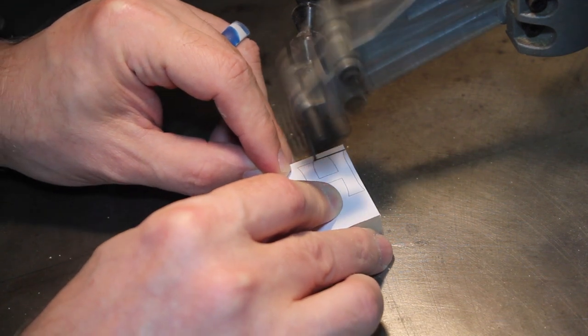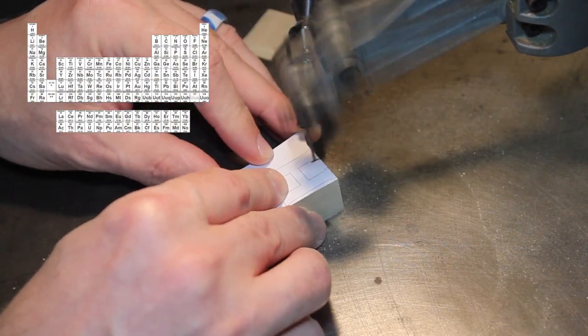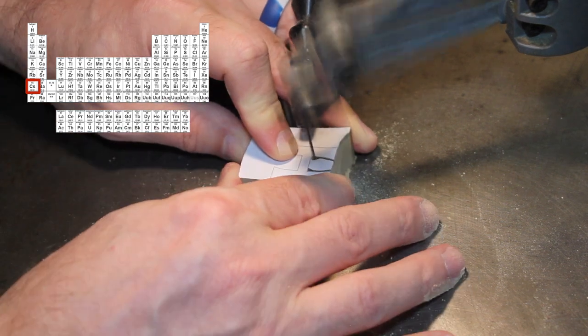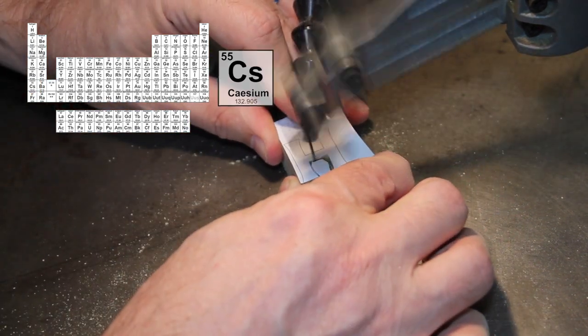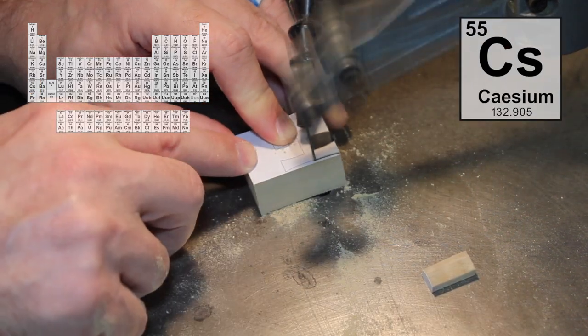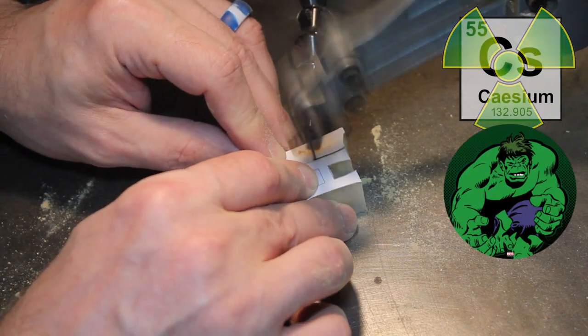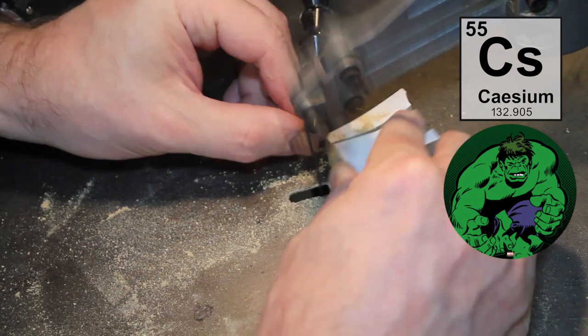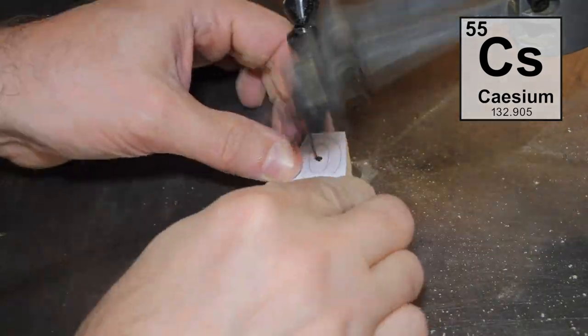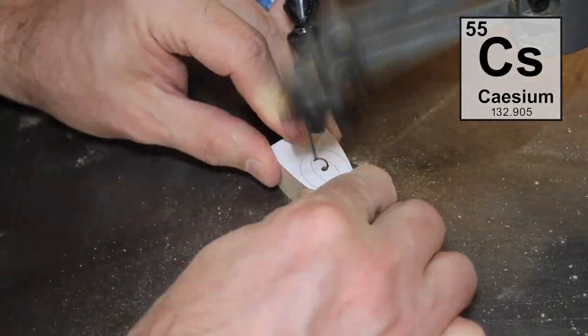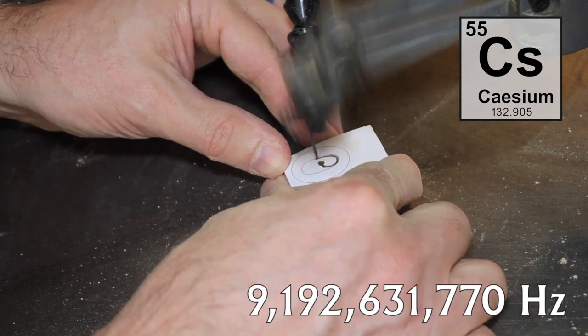Here we go. Scroll saw time. Now this is the periodic table and here is cesium. This is a radioactive element. It throws off some gamma rays so you could turn into the Incredible Hulk. No, just kidding. But the interesting thing about this is how it resonates. It resonates at this frequency.